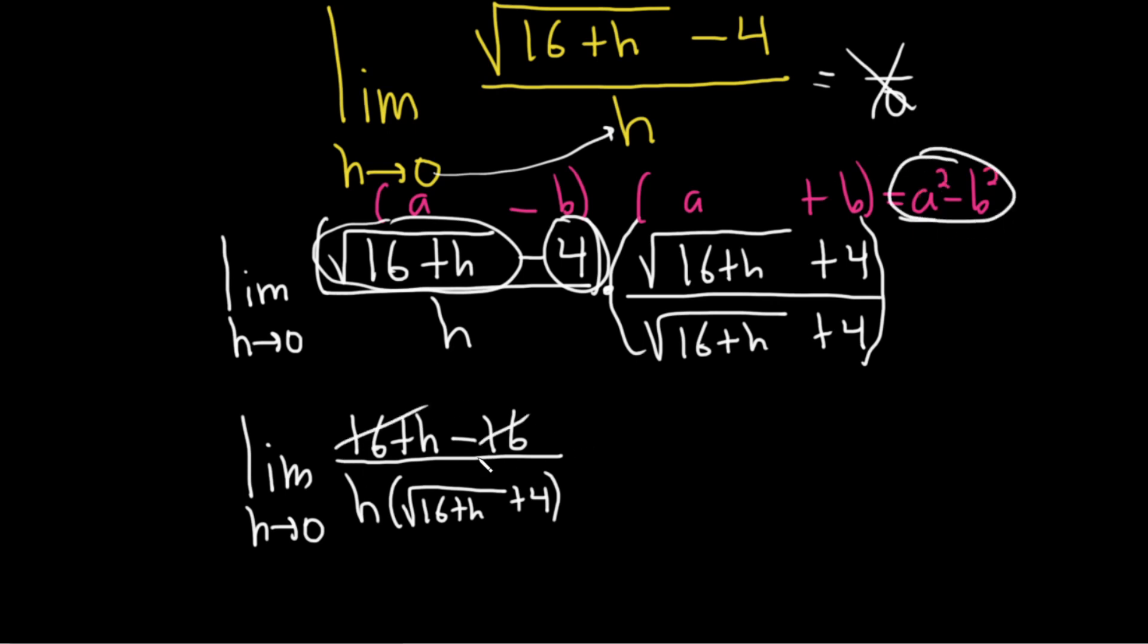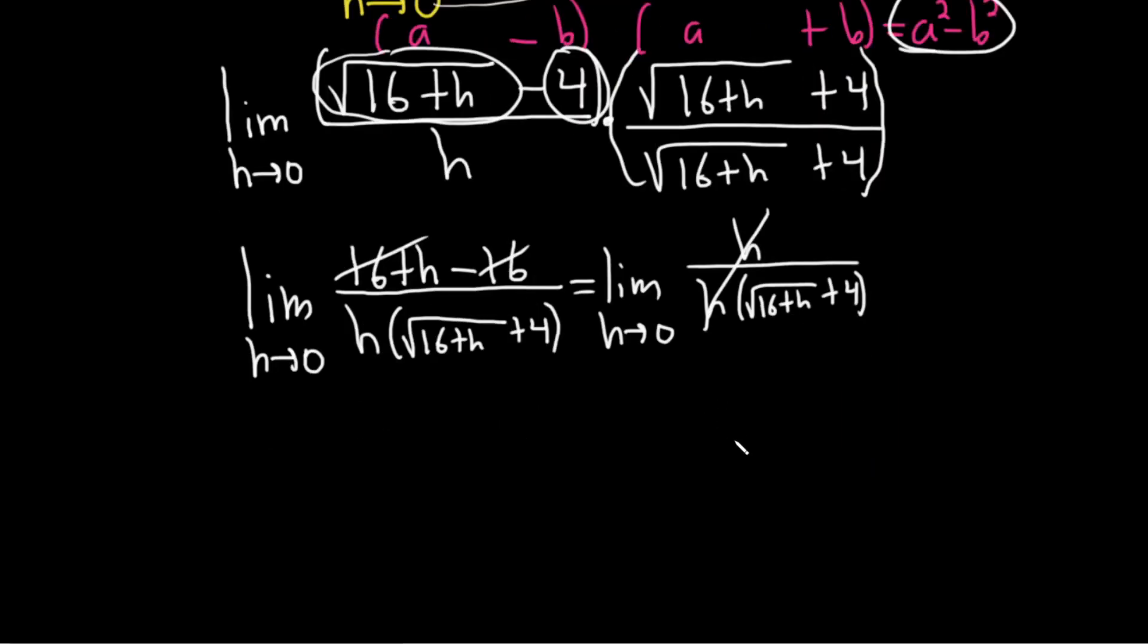Now the 16s go away. So this is the limit as h approaches 0 of h over h. Then here we have the square root of 16 plus h plus 4. These go away. So we have the limit as h approaches 0. And now we have 1 over the square root of 16 plus h. And then we're left with the 4 here. So plus 4.